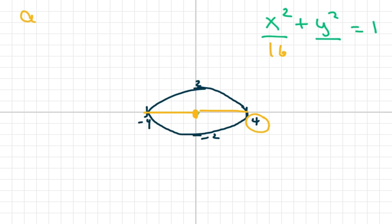So a is 4. a squared is 16. b equals 2. So b squared is 4.